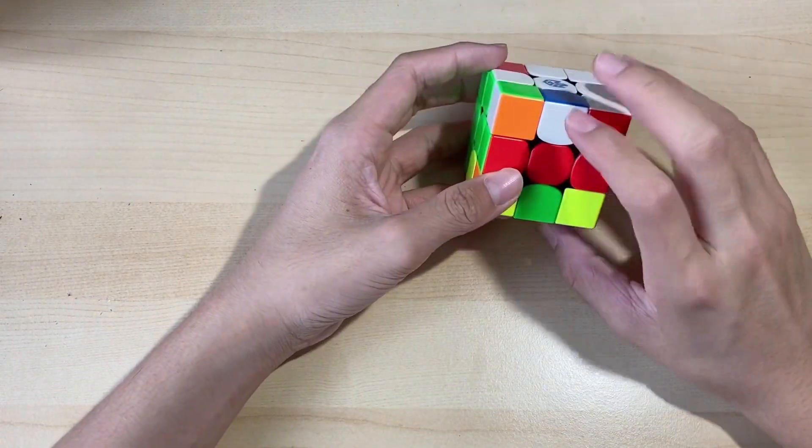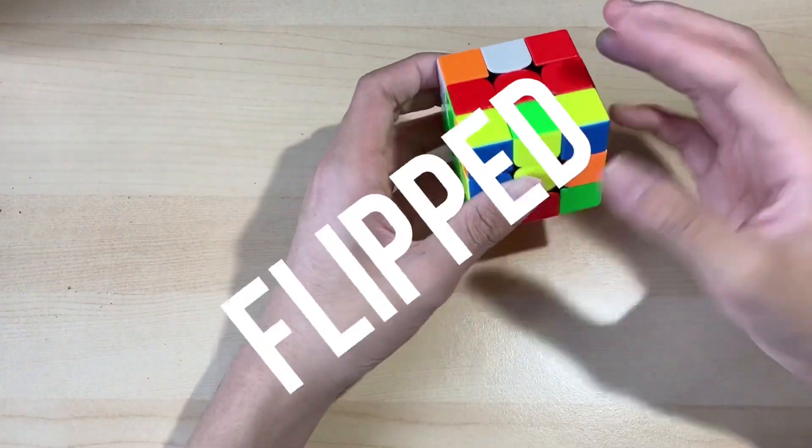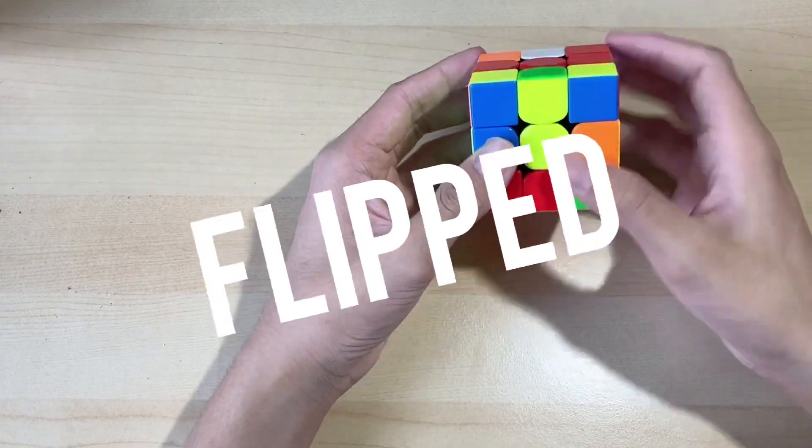Oh, but this cross piece white piece needs to be flipped. So we'll find this one and flip it.